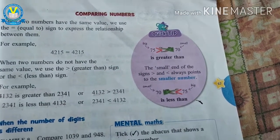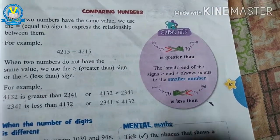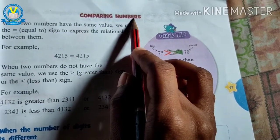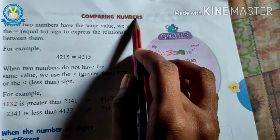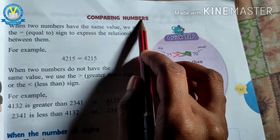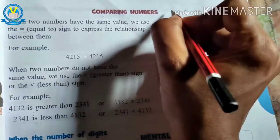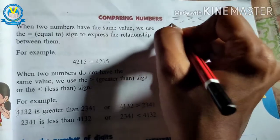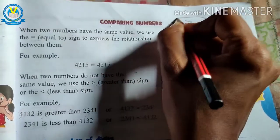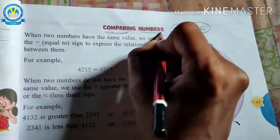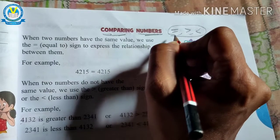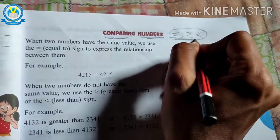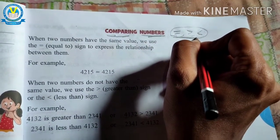We have discussed about comparing numbers. Comparing numbers means using 3 symbols. What are those? Equal to, greater than, and less than. These 3 symbols are used for comparing numbers. Now, when and how to use these 3 symbols? Let us see some examples.